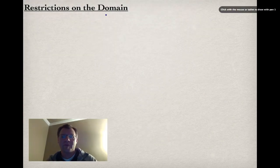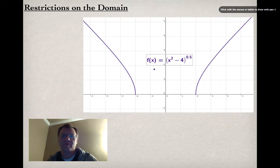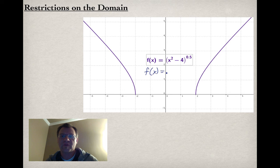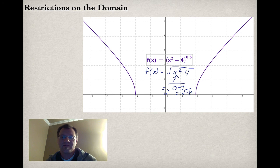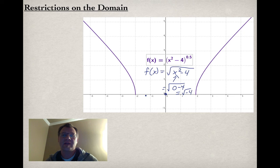Let's talk about restrictions on the domain. For a function like f(x) = (x² − 4)^0.5, which is just f(x) = √(x² − 4), we can see that the graph does not exist between x = −2 and x = 2. If I try to plug in any x-value between −2 and 2 — say x = 0 — I get √(0 − 4) = √(−4), which we can't evaluate. That's why it's part of the restrictions. The graph only exists to the right of 2 and to the left of −2.